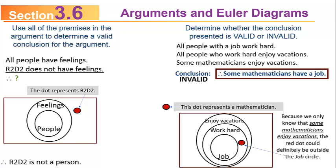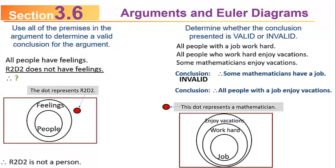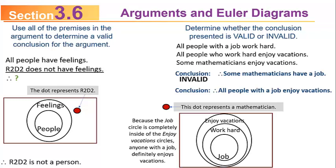This takes practice, but the more you do it, the better you'll get. Using the same three premises with a different conclusion — therefore, all people with a job enjoy vacations — the job circle is completely inside the enjoy vacation circle. If the person is inside the job circle, they would automatically be inside the vacation circle. So that conclusion is valid — that argument is a valid argument.